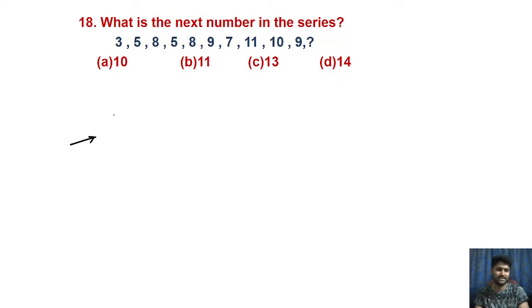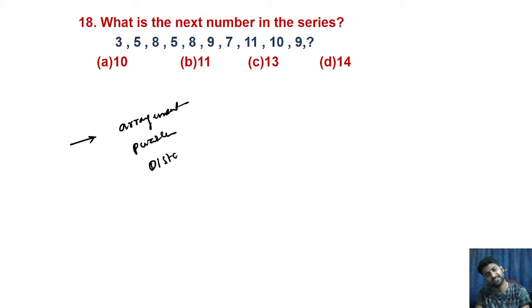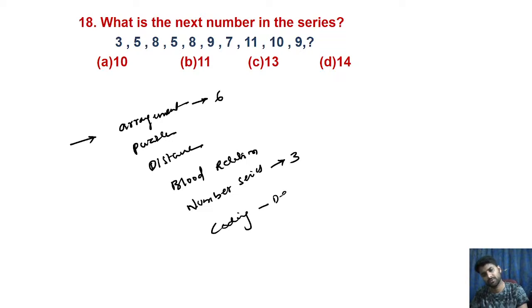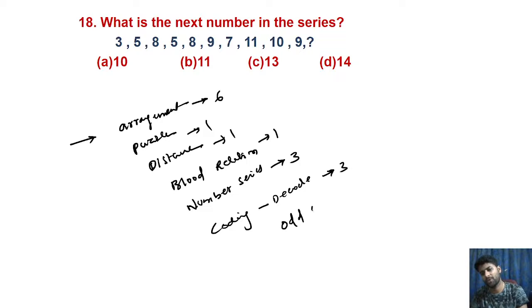Looking at the Accenture paper: they are concentrated on arrangements — almost six questions. One question from puzzles, one from distance, one from blood relations, three questions from number series, three from coding and decoding, one from puzzle, one from distance, one from blood relation, and two questions from odd one out. These are the main important topics from the reasoning section.